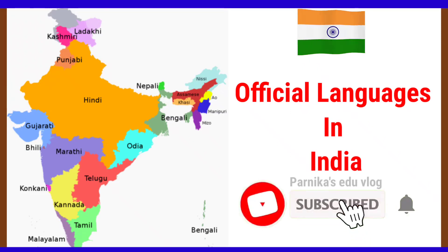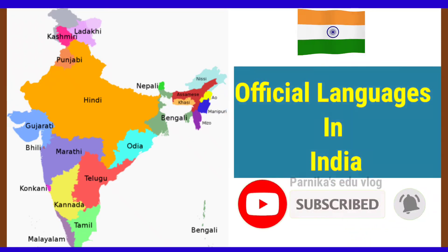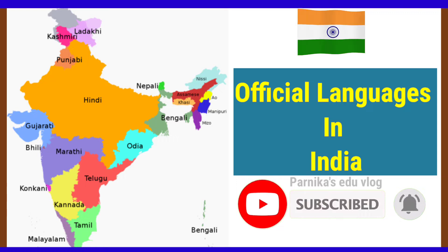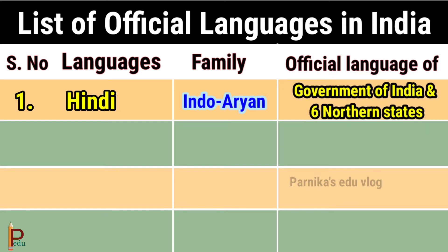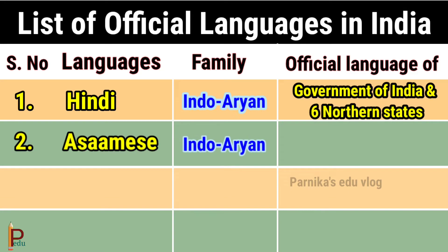Hello friends, let's see the details of official languages in India. Language Hindi belongs to the Indo-Orient family and is the official language of the Government of India and six northern states. Language Assamese belongs to the Indo-Orient family and is the official language of Assam.